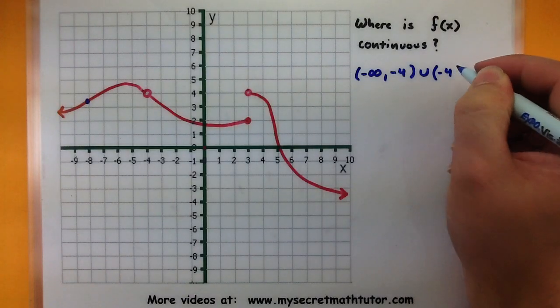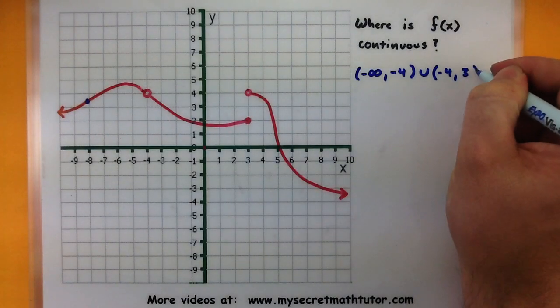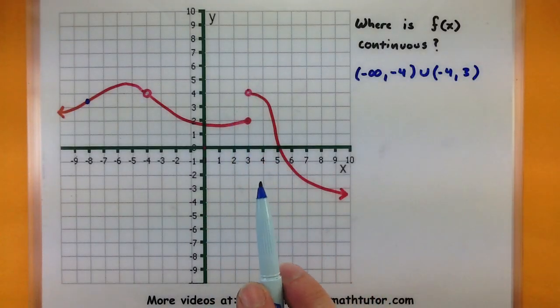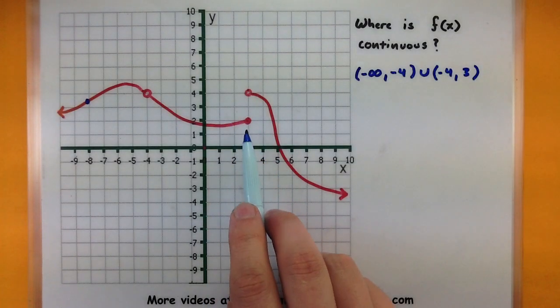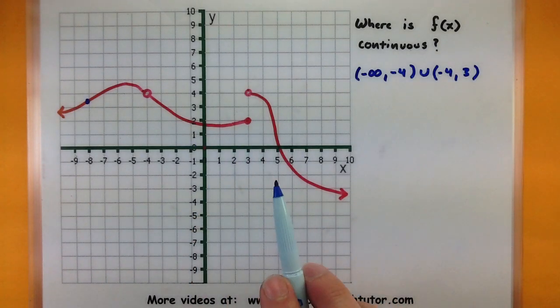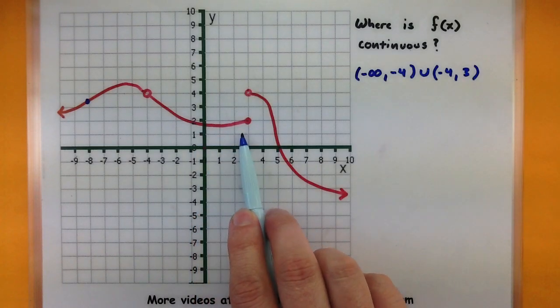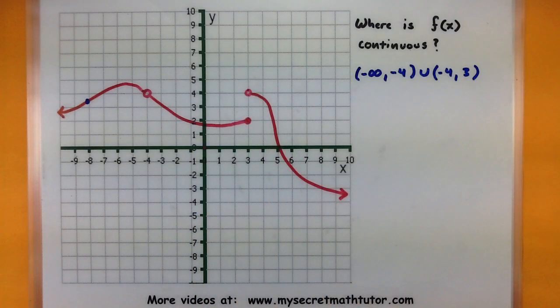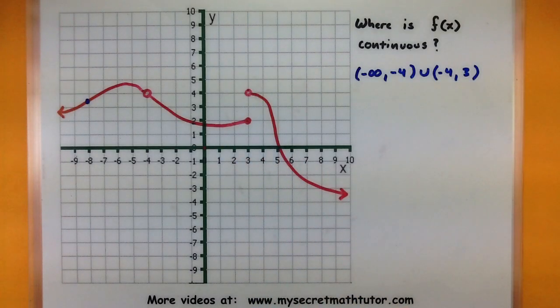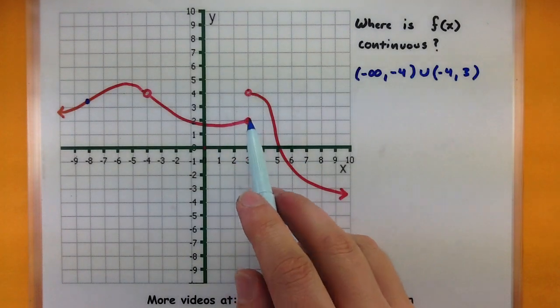Also between negative 4 and 3 would be a good interval. So negative 4 up to positive 3. Here we have one of those huge leaps, let's see why it's not continuous there. The function value exists at 3, you get the value of 2, but looks like the limit doesn't exist because the left limit and the right limit do not agree.